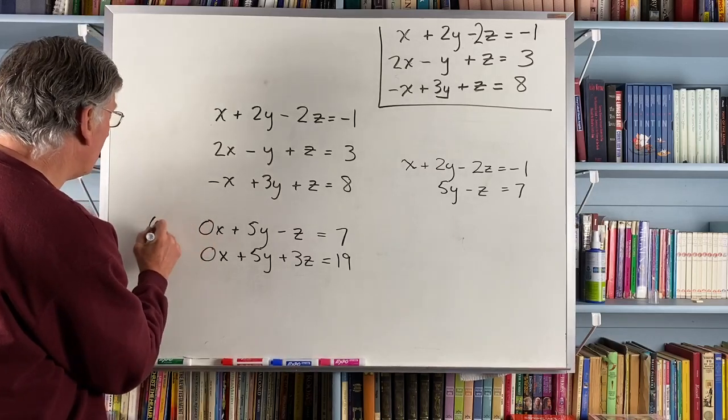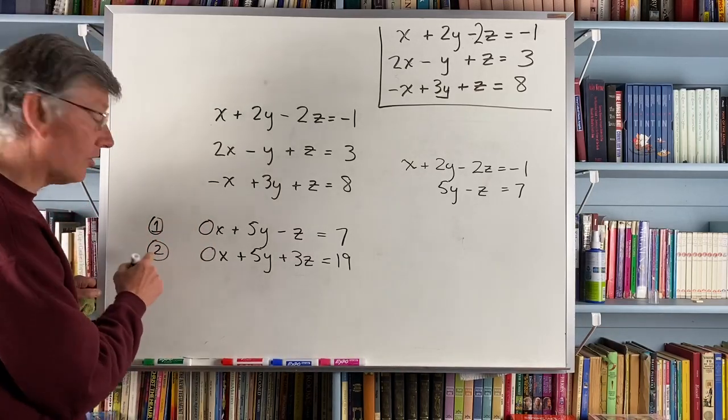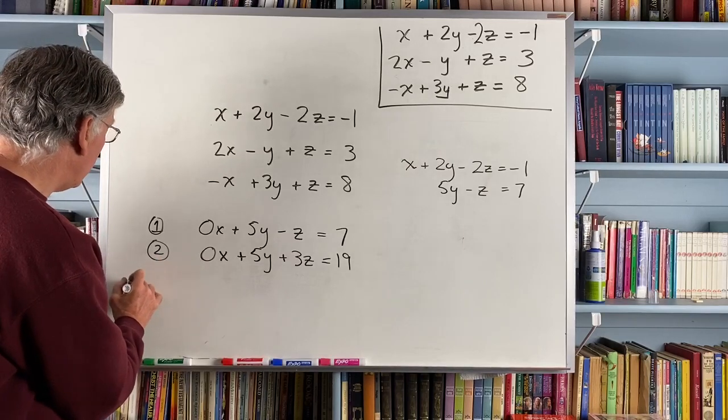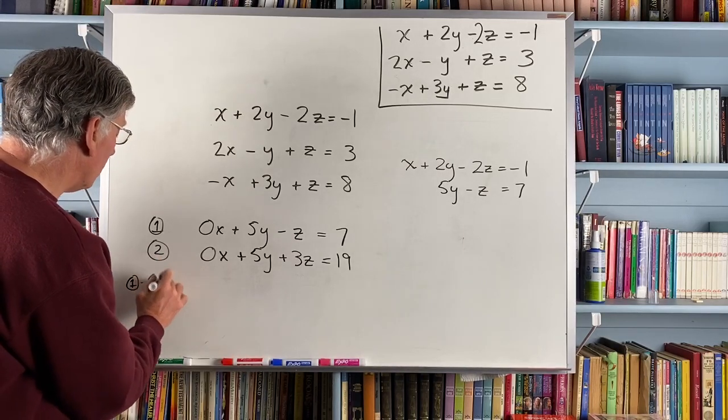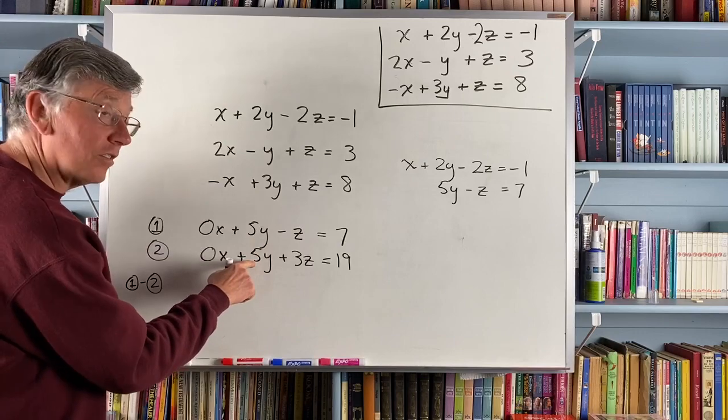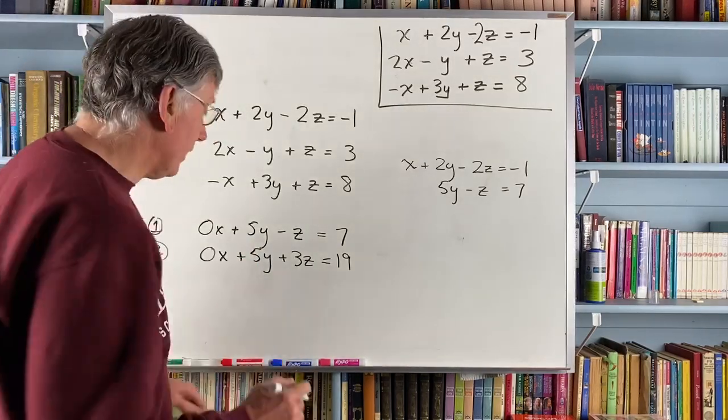I can take this. This is my equation number one and this is my new equation one and my new equation two. I'm going to take 1 minus 2. I'm going to take 1 minus 2 because 5y minus 5y will give me the 0y that I want.